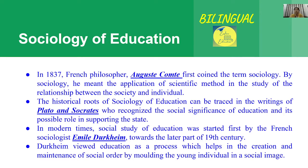Durkheim was viewing education as a process that can create and maintain social order — meaning a social system. Through education, we can build and sustain a social order by molding young individuals into a social image. From this, we can understand socialization and social stratification. Education, family, and many other agencies contribute to this socialization process. This discussion relates to sociology of education.